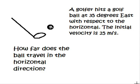The golfer hits a golf ball at 35 degrees east with respect to the horizontal. The initial velocity is 25 meters per second. How far does the ball travel in the horizontal direction?